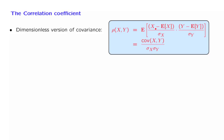If x has units of meters, then the standard deviation also has units of meters, and so this ratio will be dimensionless. It is not affected by the units that we're using, and this is why the correlation coefficient does not have any units of its own.